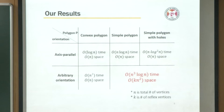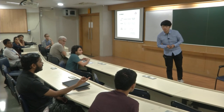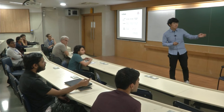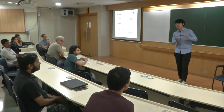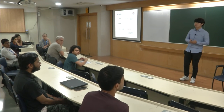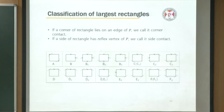We give an algorithm that computes the largest area arbitrary-orientation rectangle in O(n³ log n) time using O(k²n) space, where k is the number of reflex vertices in the polygon. A reflex vertex means a non-convex vertex, i.e., a vertex whose inner angle is greater than pi. To do this, we classified the largest rectangles into six types.